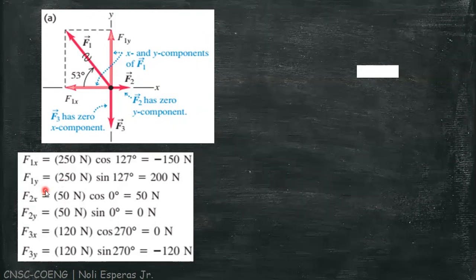Using the component method, here are the x and y components of each force. For F1 we have -150 N for x and 200 N for y. For F2 we have 50 N for x and 0 N for y. For F3 we have 0 N for x and -120 N for y. To verify these components, check our illustration. We can see that F2 is horizontal therefore there's no y component, same with F3 which is vertical therefore it has 0 x component.